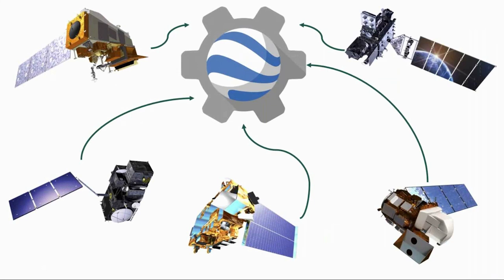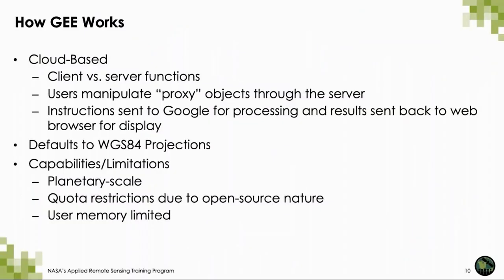What's great about Google Earth Engine is that it is freely available to the public, and it grants us fairly easy access to satellite imagery from a number of NASA and ESA satellites, including Landsat and Sentinel. Earth Engine is a cloud-based platform with client and server functions. The user manipulates proxy objects through the server, working with the Earth Engine interface to send instructions to Google for processing. Instead of performing analyses on our own computer, we send requests to Google and results are sent back to the web browser for display. Everything in Earth Engine defaults to WGS-84 projections, which is important as we learn how to export our data.